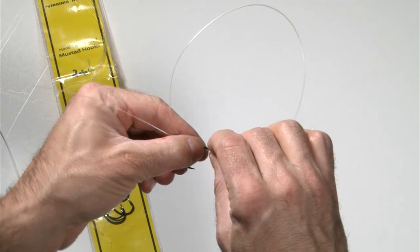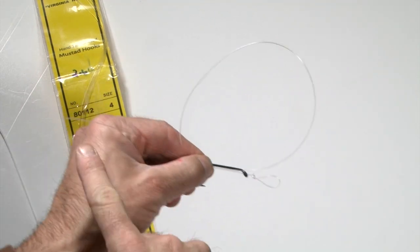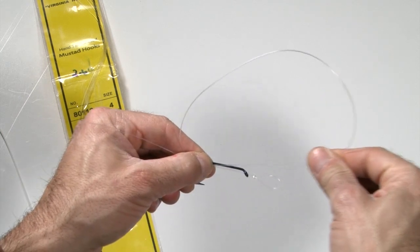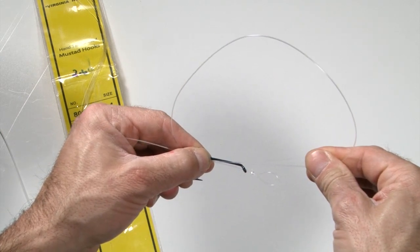Take the free end, make a loop over the hook. Now you can have this tag end, just pull the loop until the tag end is pretty close to the end of the hook.